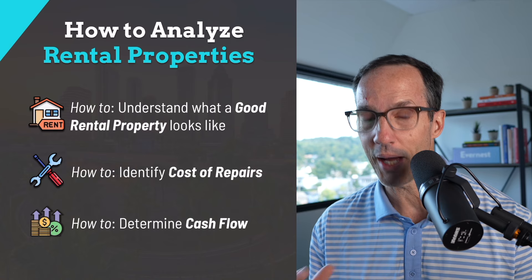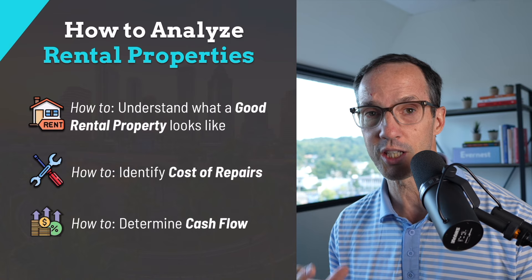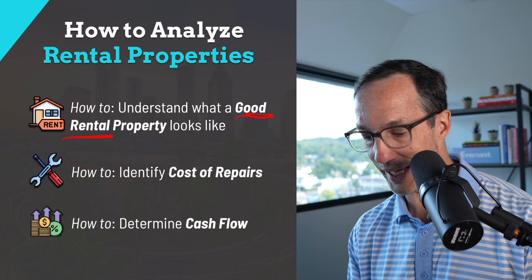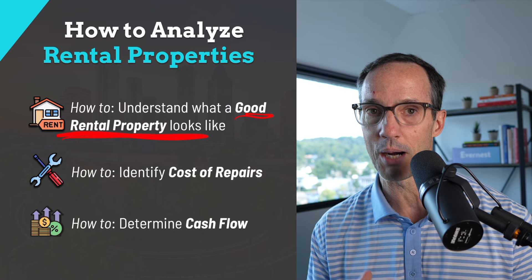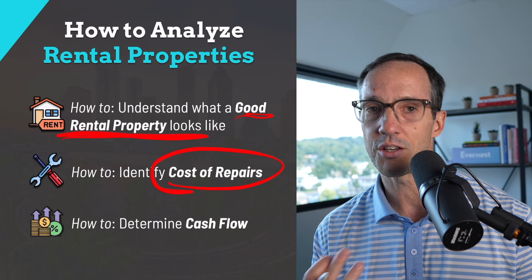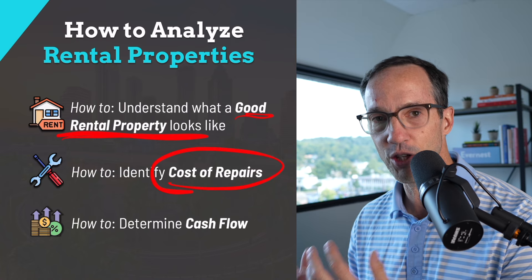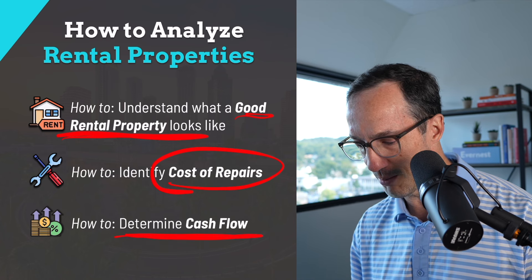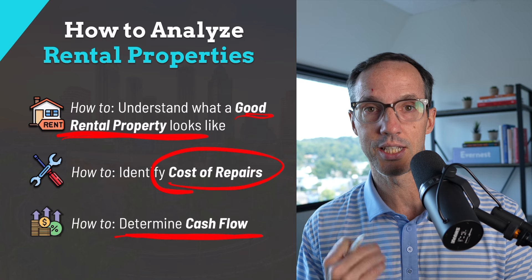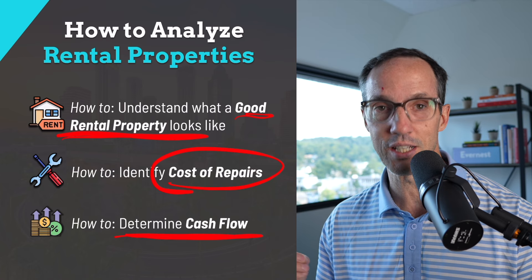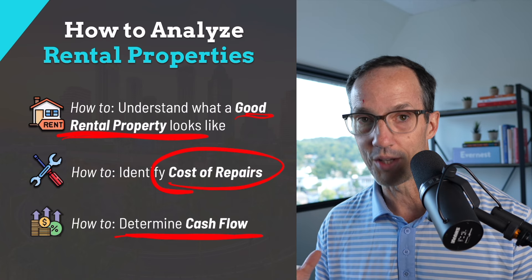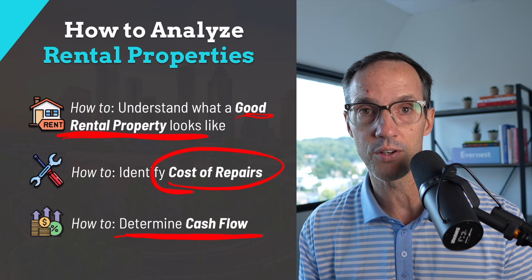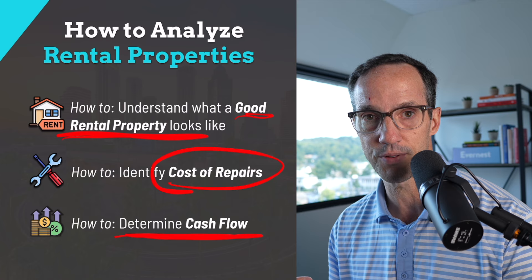In this video, you're going to learn how to analyze rental property, and I'm going to show you three main things: number one, how to understand what a good rental property looks like; number two, how to determine the cost of repairs and how to factor this into your offer; and lastly, how to determine whether this property has good cash flow. This is something every investor wants to know, and I'm going to show you how to figure this out so you can adjust your offer based on your desired cash flow.